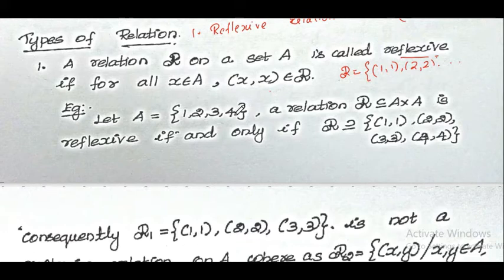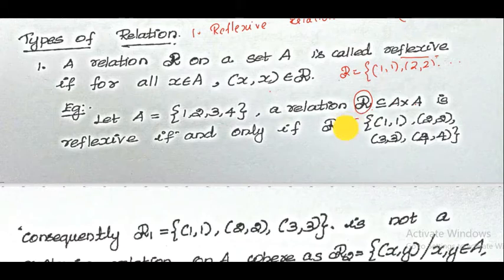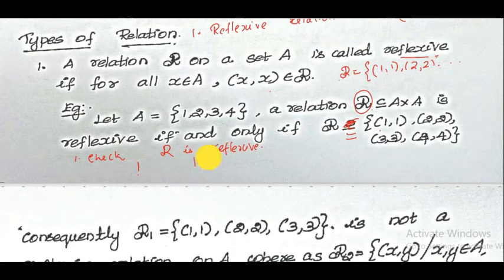For example, let us consider a set A equal to {1, 2, 3, 4}. I will define a relation R equal to {(1,1), (2,2), (3,3), (4,4)}. The question is: check whether R is reflexive. First, 1 is related to 1, which means (1,1) should belong to relation R.